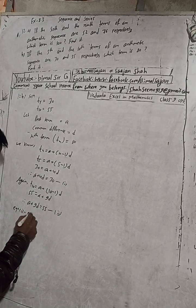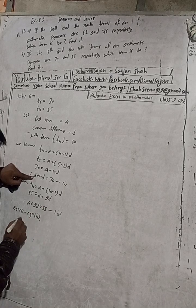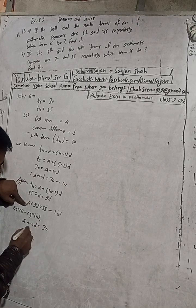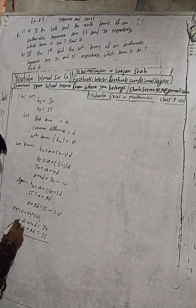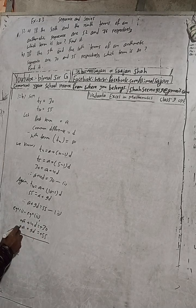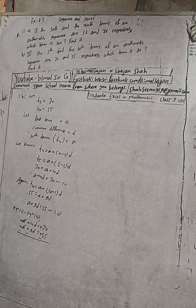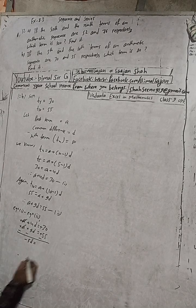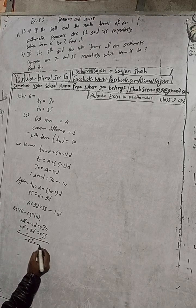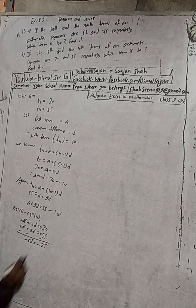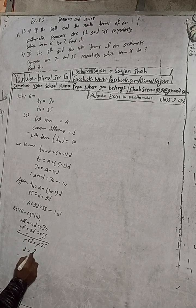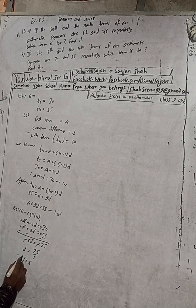Now solve. Equation 1: a plus 4d equals 30. Equation 2: a plus 9d equals 55. Subtracting equation 1 from equation 2 — the a terms cancel, giving minus 5d equals minus 25, so 5d equals 25. Therefore d equals 25 divided by 5, so d equals 5.